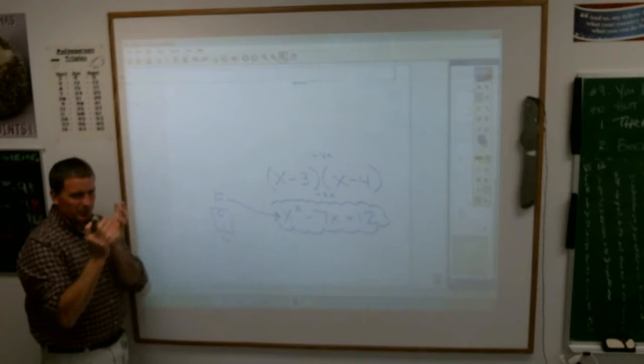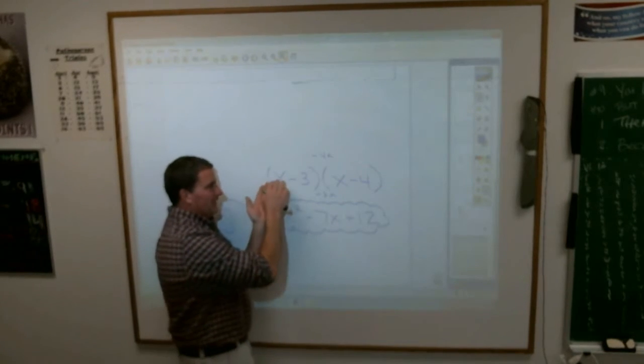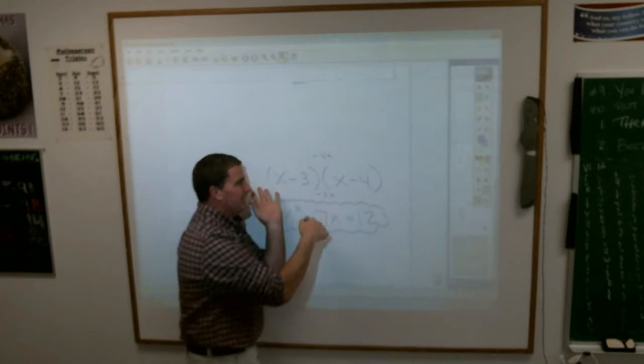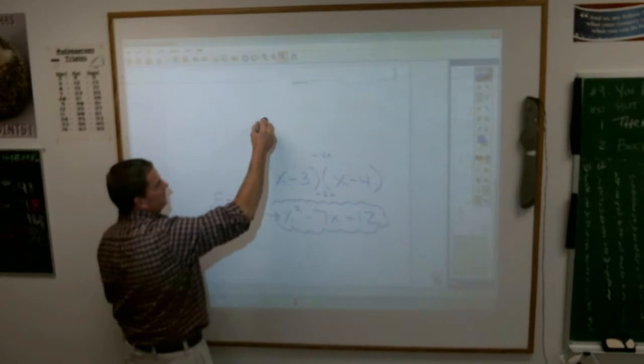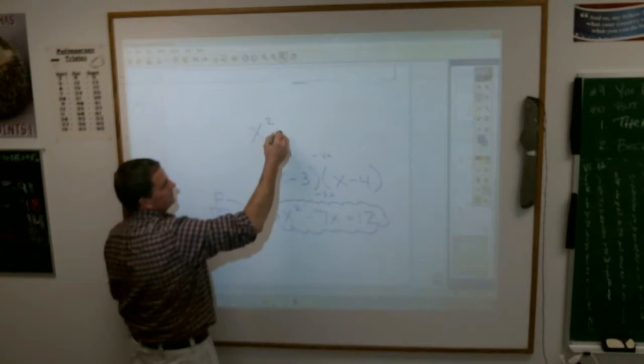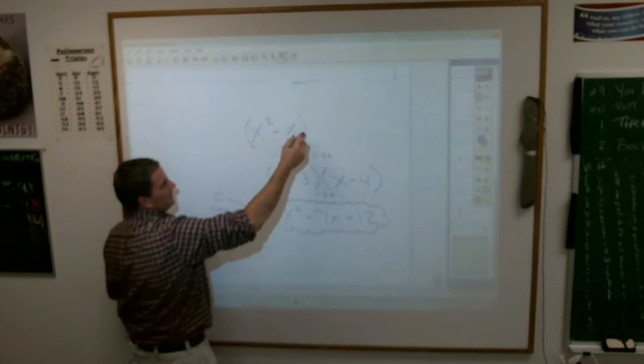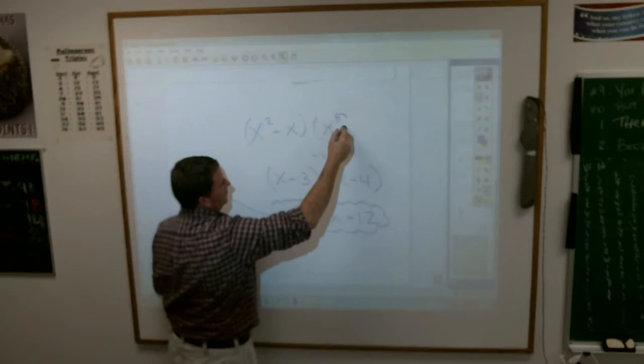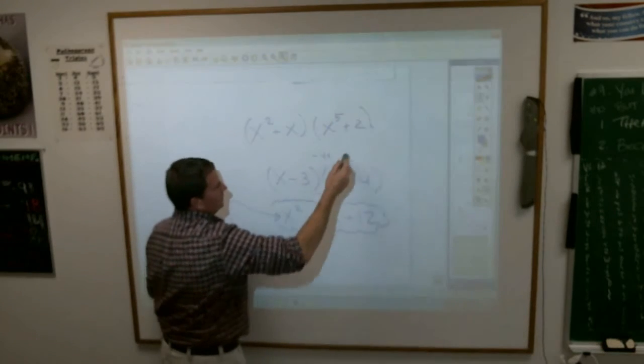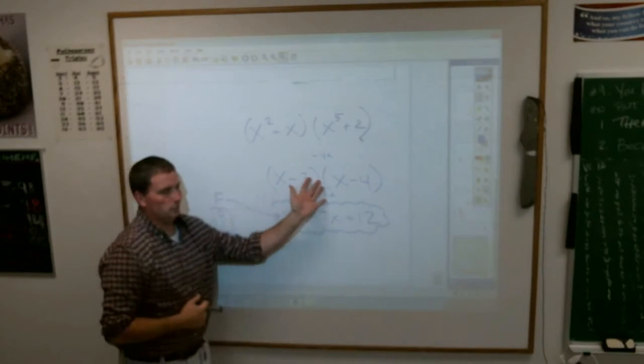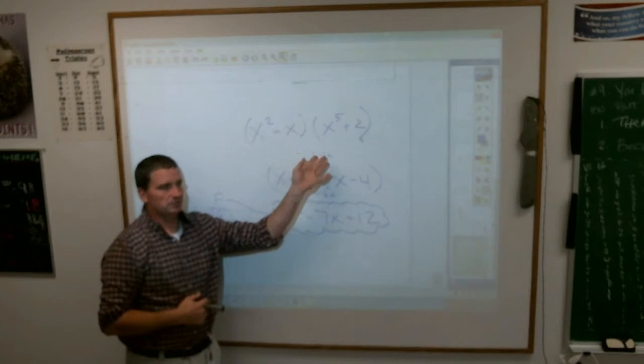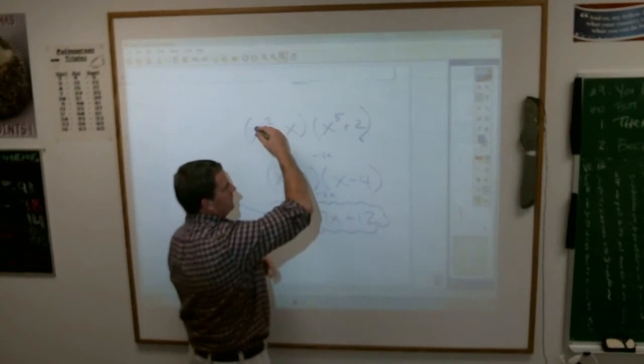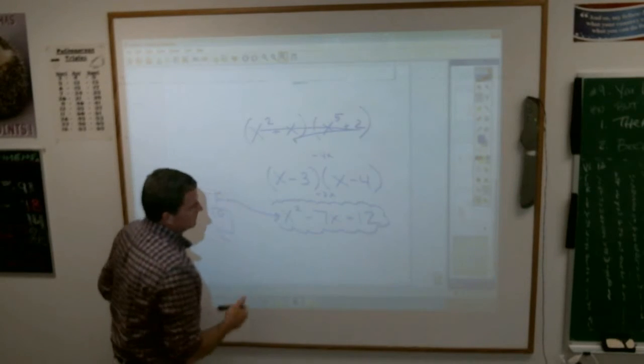Now this only works, again, let me reiterate, when it is a letter and a number. Because you can make all sorts of differences. This is a binomial. And I can multiply that by x to the fifth plus 2. If you multiply those two binomials together, this doesn't work. It only works when you have x and a number, x and a number. But that's all they're going to give you.